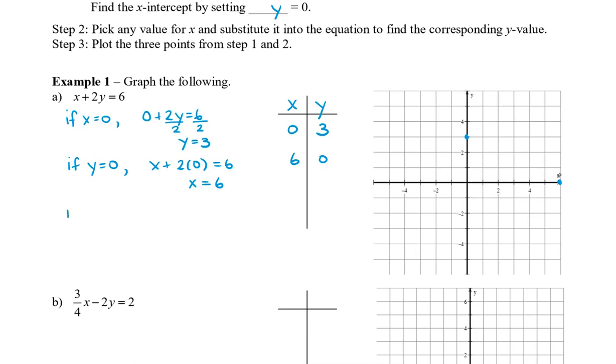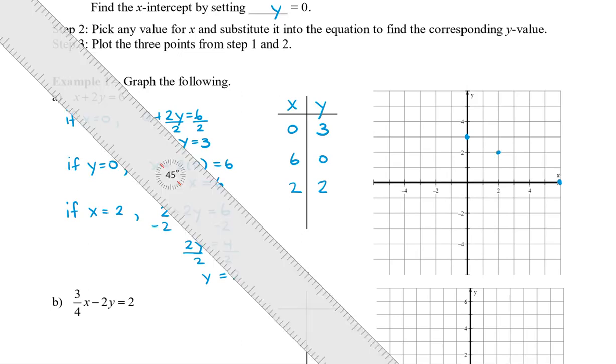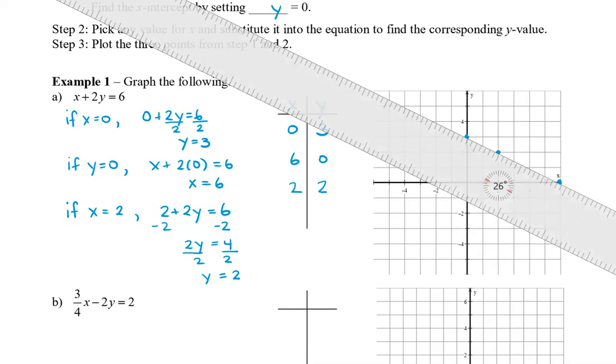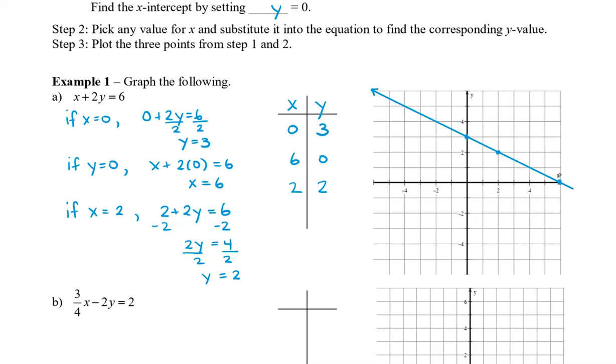So, let's say if x equals 2. So, we're going to have 2 plus 2y equals 6. Subtract the 2 from both sides. So, now we have 2y is equal to 4. Divide both sides by 2. And y equals 2. So, we have 2, 2. And we plot that point as well. And we take out our ruler. And we can see that all three of these points lie on this line. So, now we're going to connect them. And draw our arrows on the ends to say that the line continues on and on.